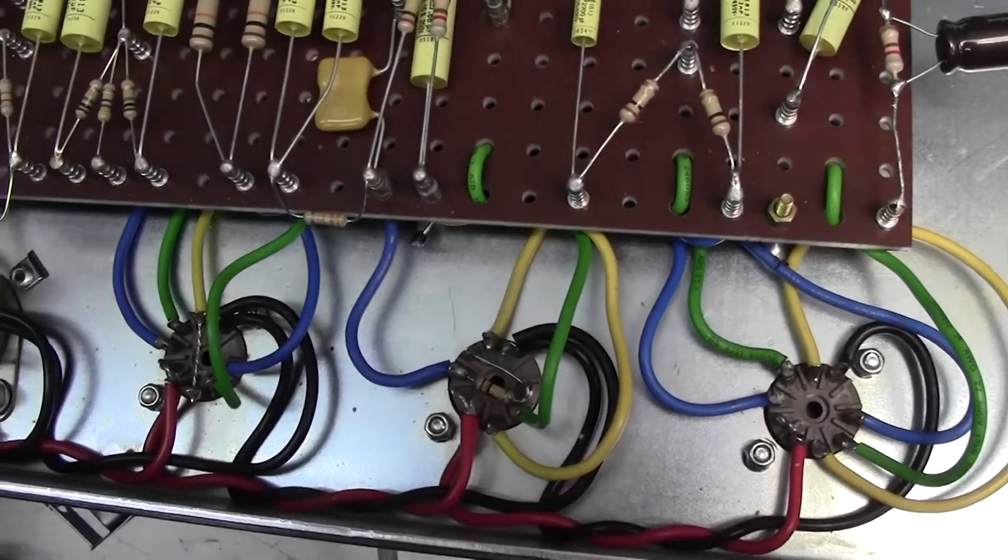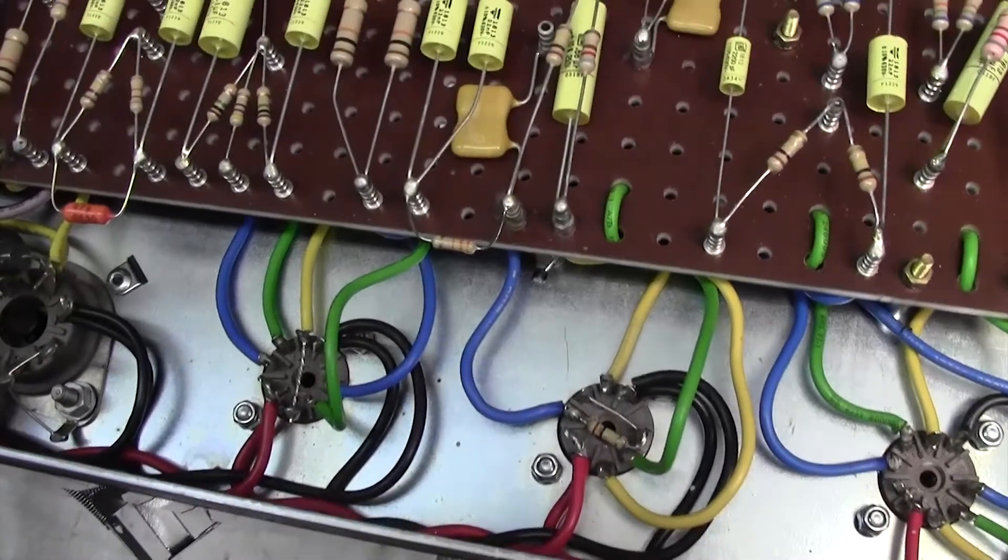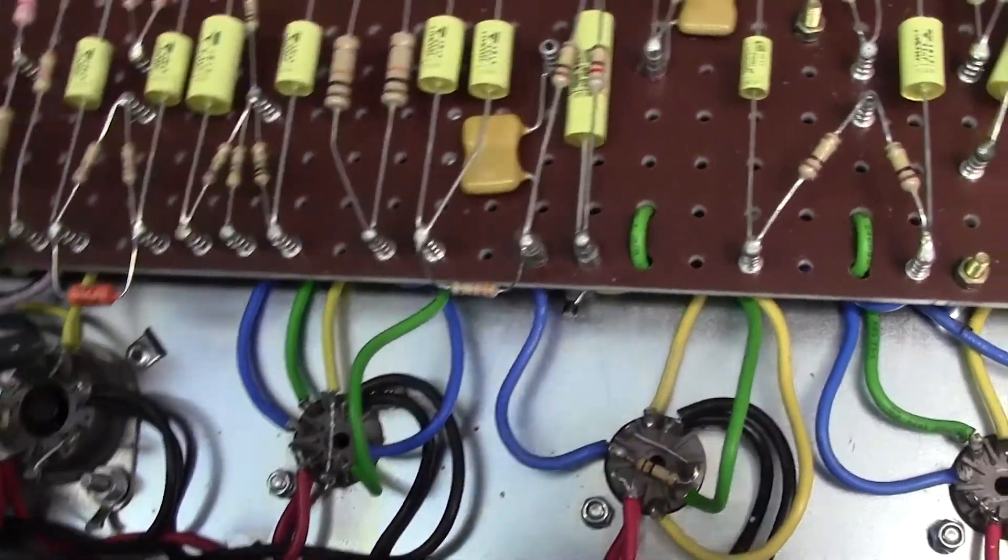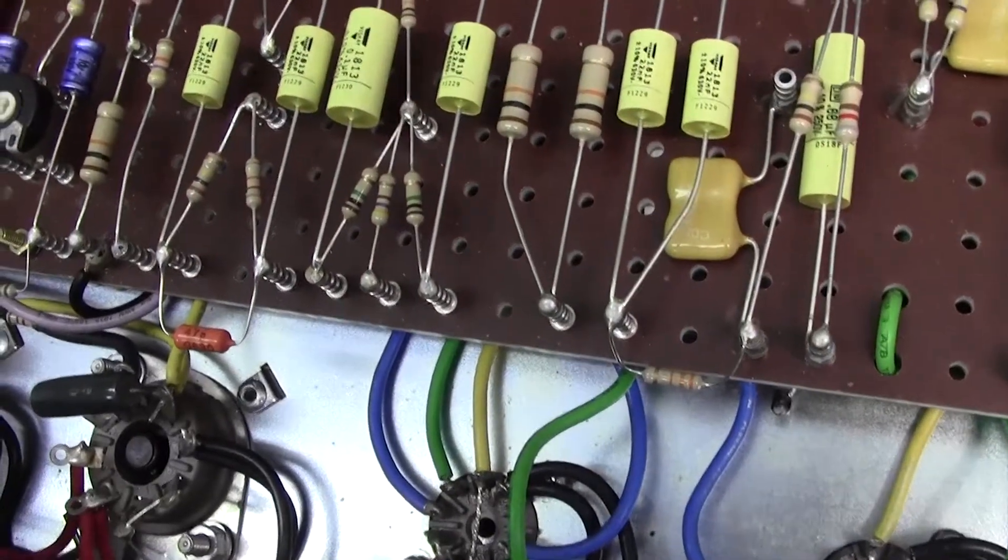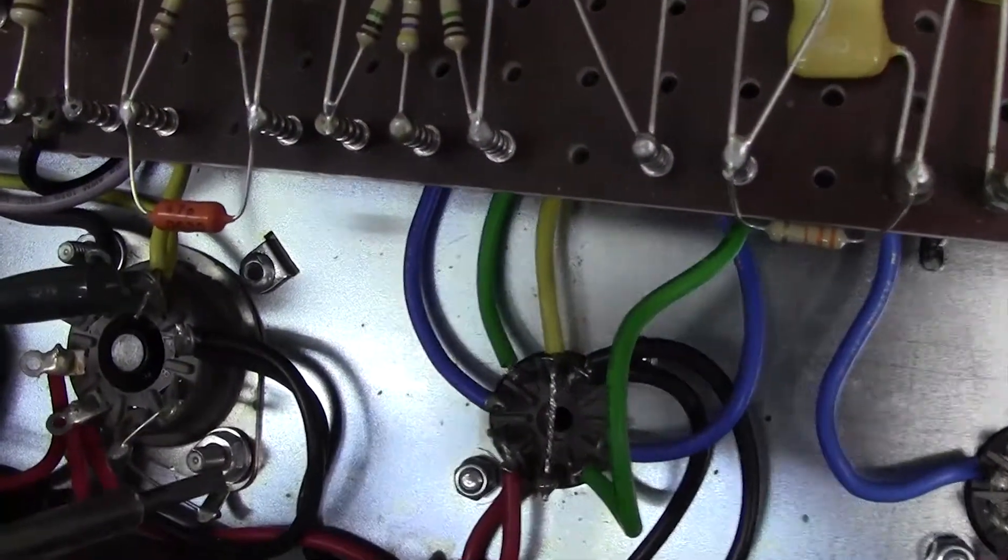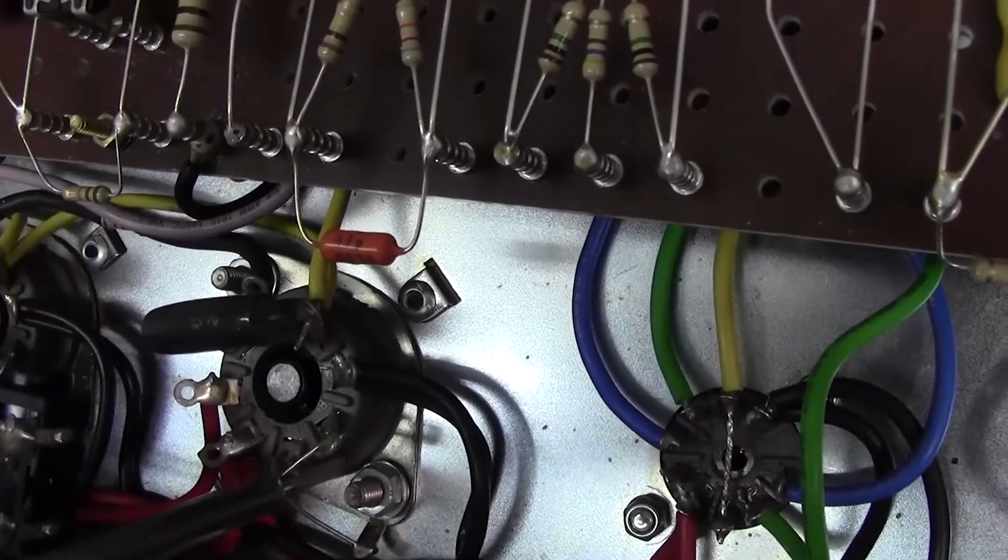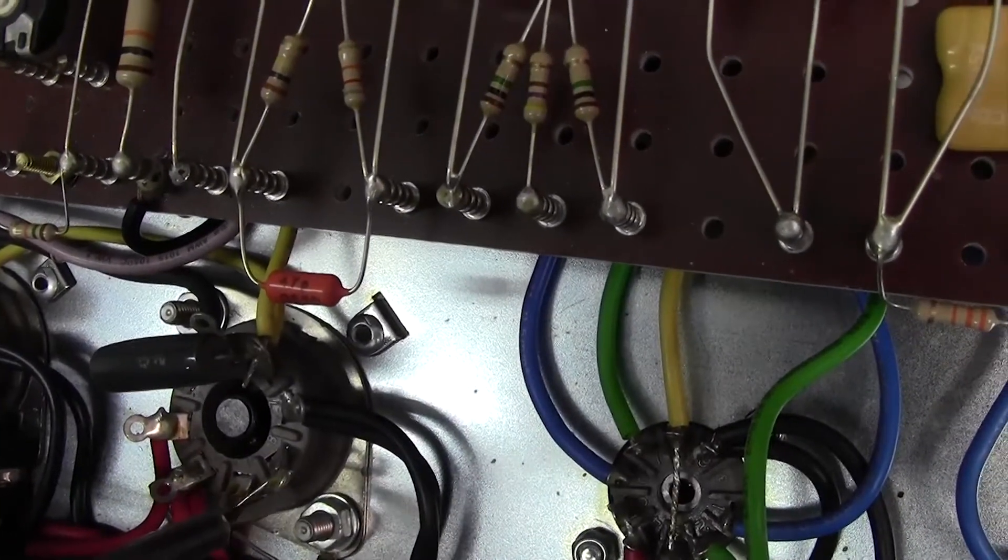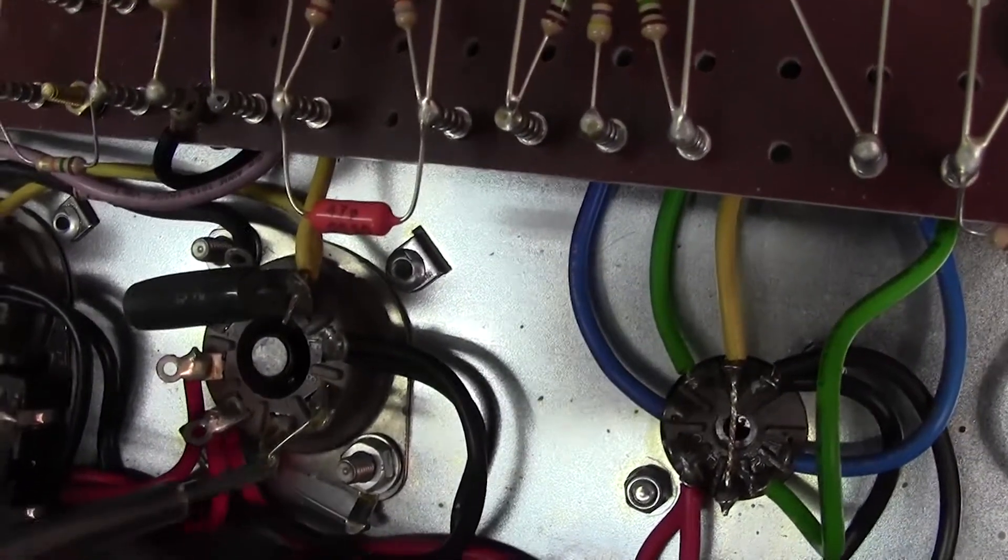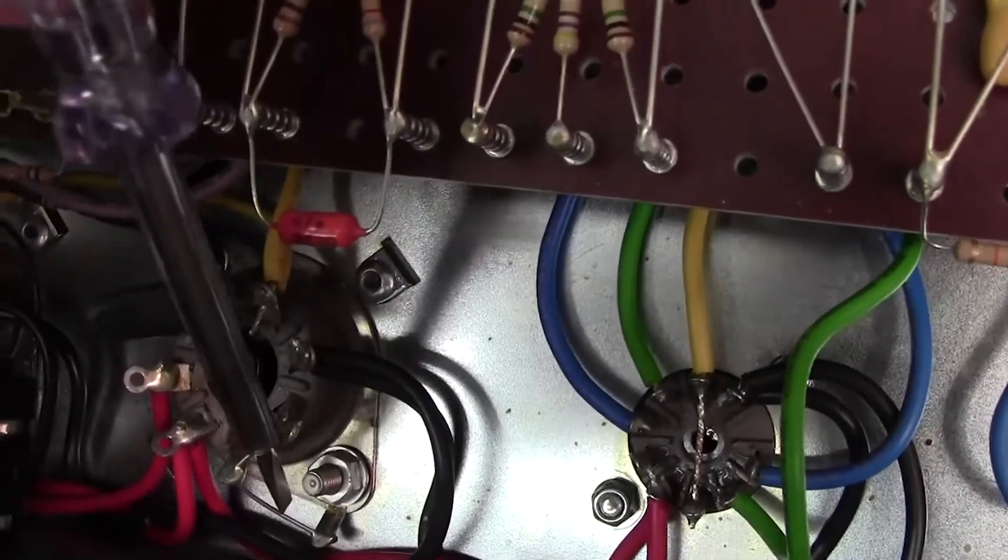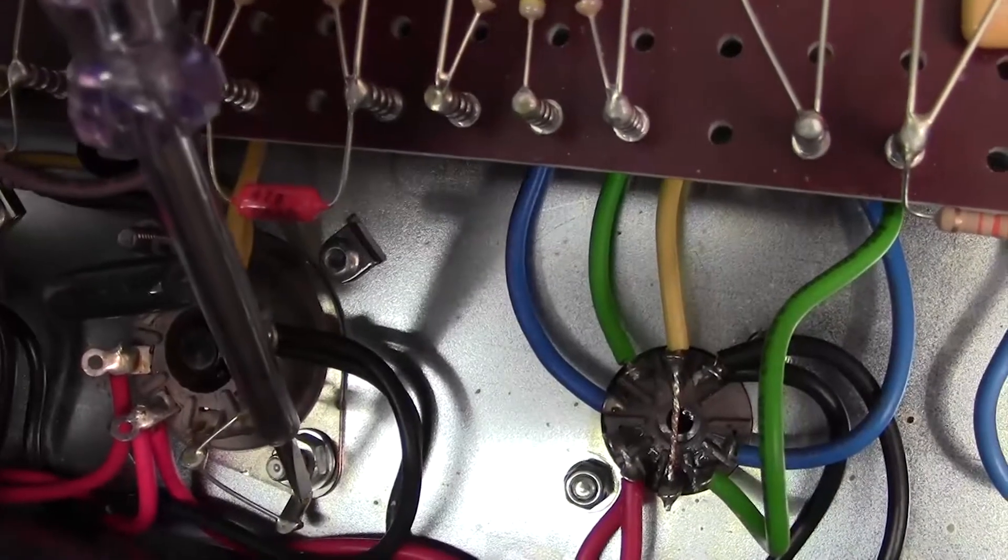What I'd like to do now is show you a way of biasing this amp without using a bias meter. I hope you can see this, but on this tube base here, pins 1 and 8 are connected together with a short length of tinned copper wire, and that wire goes down to a ground tag. That's the cathode of the valve, one of the output valves, and that is grounded.